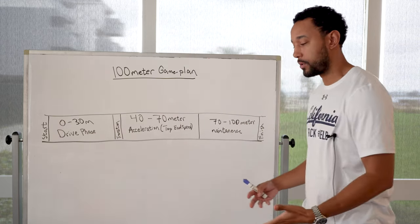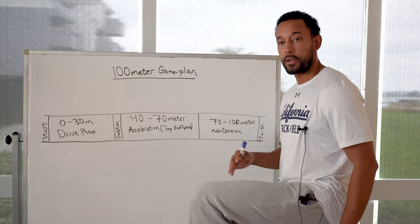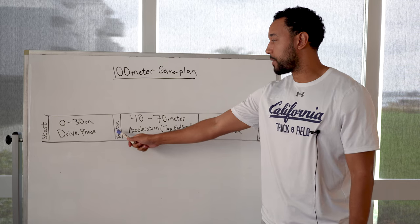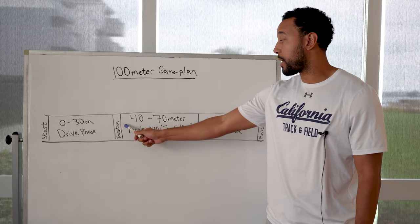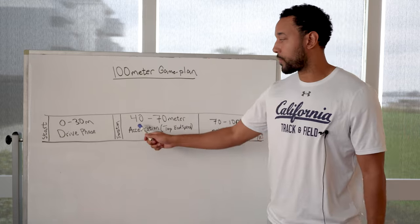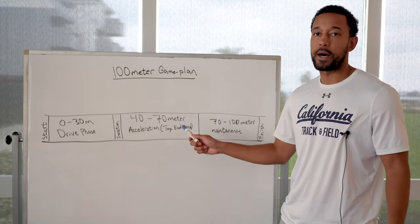You want to gradually come up to reaching your top end speed form at which point you are cycling over. It's going to be about a 10 meter phase where you're now into your acceleration into top end speed. So 40 to 70 meters is going to be top end speed.